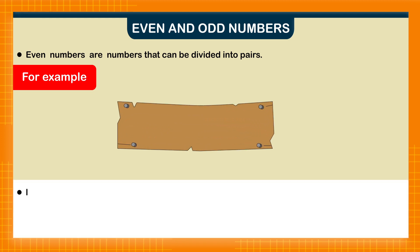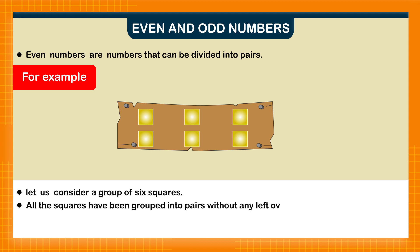let us consider a group of six squares. All the squares have been grouped into pairs without any left over. Therefore, number six is an even number.